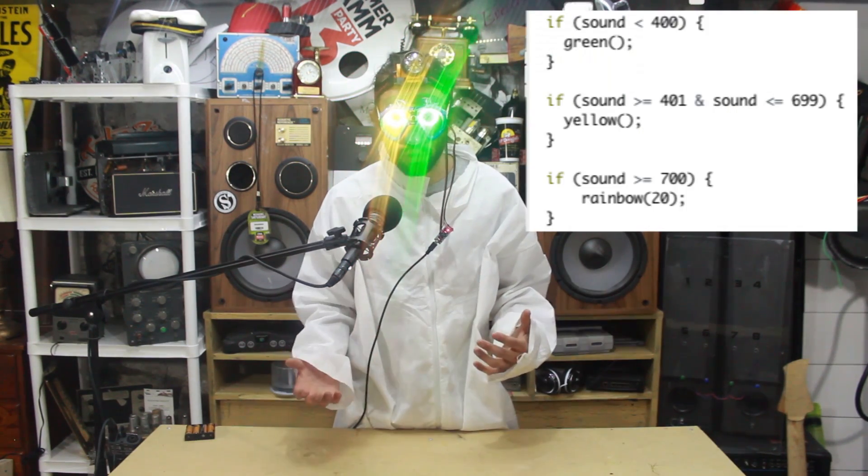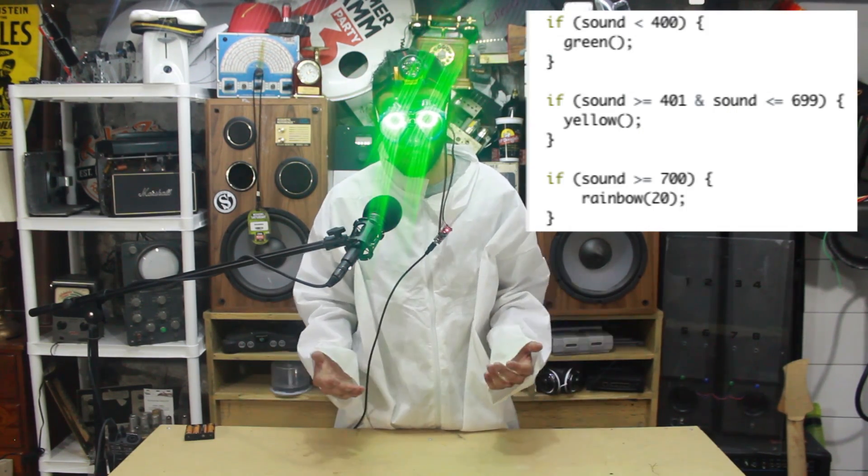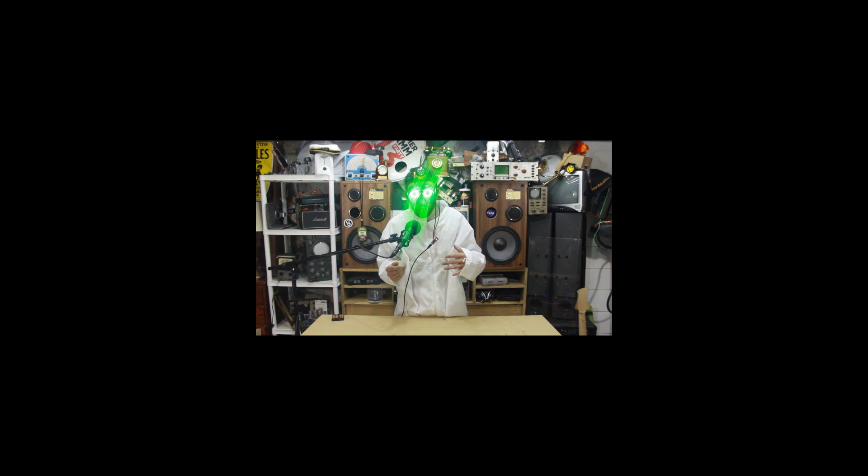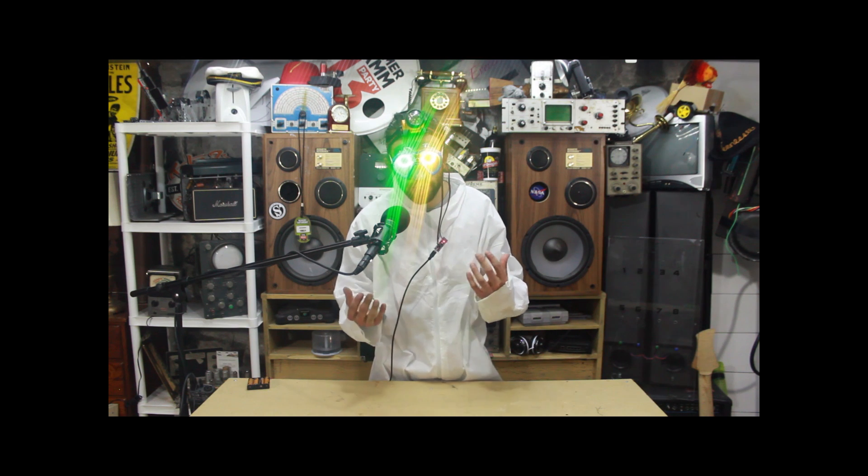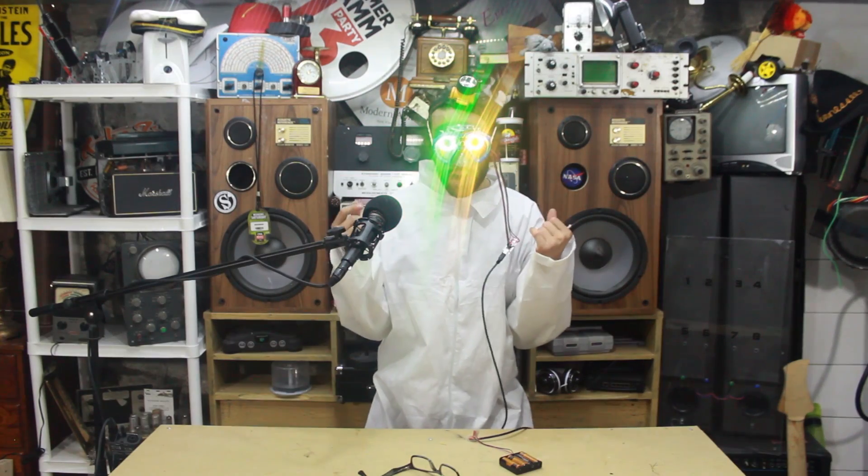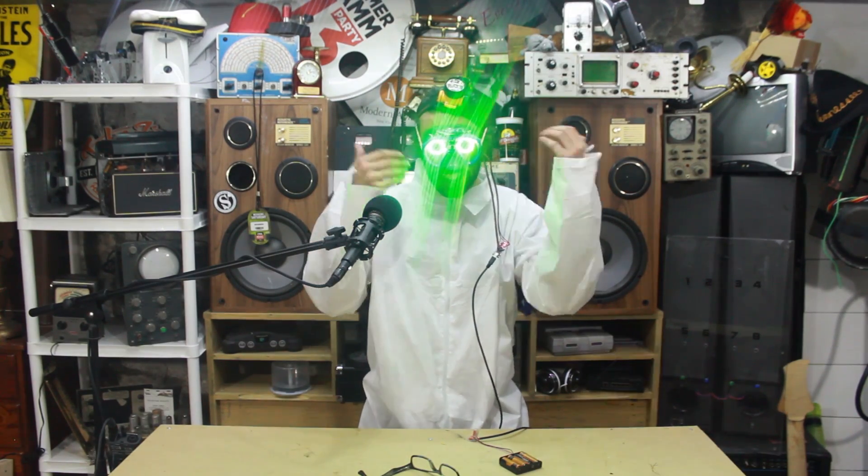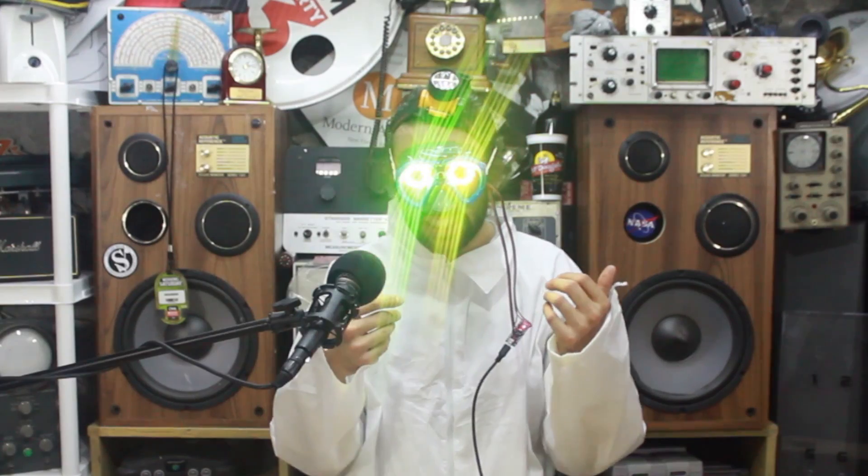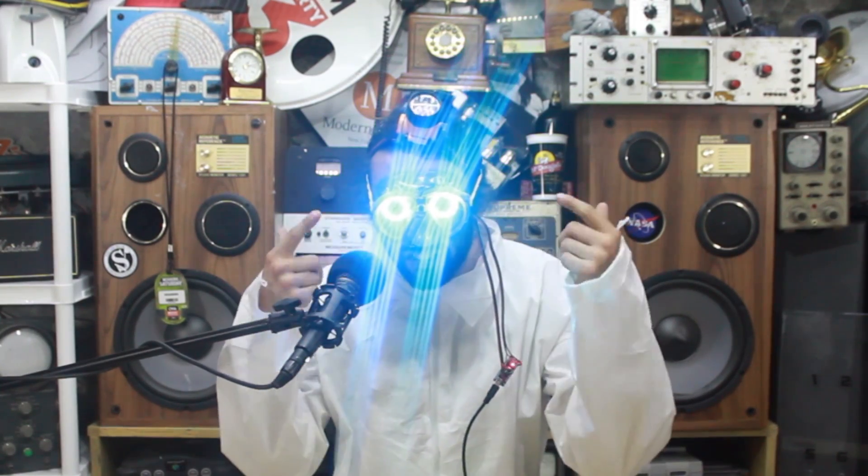In my program, I use thresholds to create three different volume categories. If the volume is in the lowest category, the pixels are green. More volume makes them turn yellow. And then if I scream really loud, it's gonna change colors! And now it fades through the rainbow.